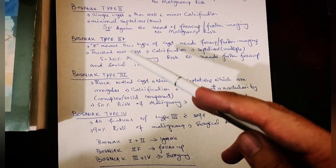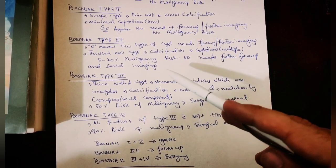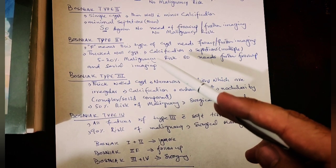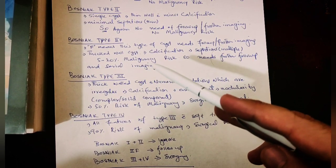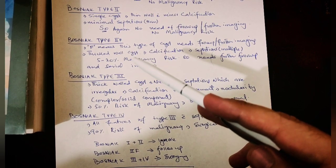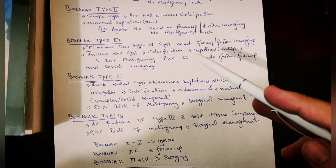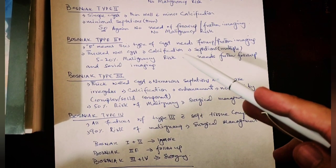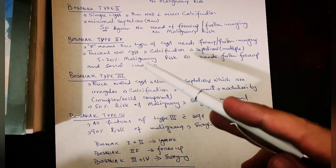Type IIF, the F here means that this type of cyst needs further follow-up and further imaging because there are certain features of the cyst. Because of these features, there is a 5 to 20 percent malignancy risk. Those features are that the wall of this cyst is thick and a bit calcified, and there are also numerous septations. These are basically malignant features.